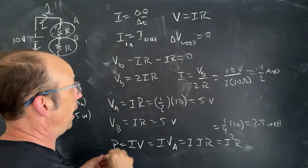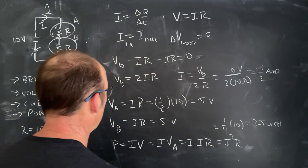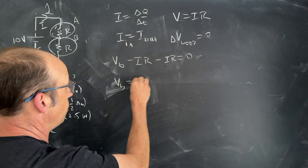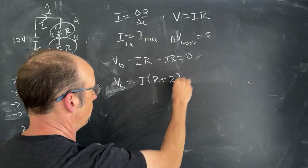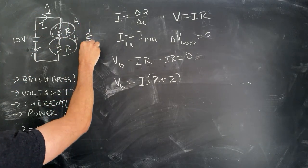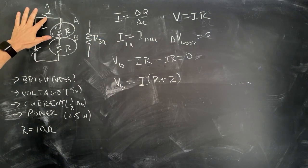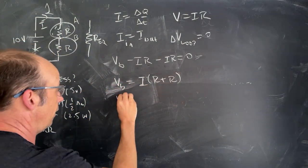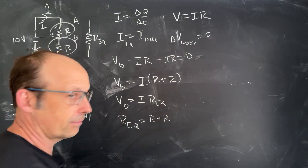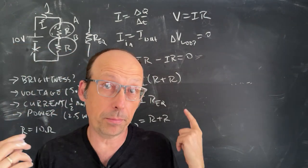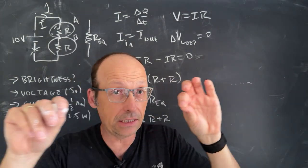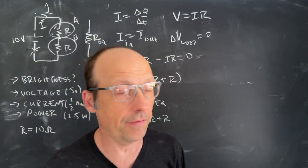Because they have the same current, I can factor that out and write V_B equals I times (R + R). It's possible to replace two series resistors with a single equivalent resistor R_eq where V_B equals I·R_eq, so R_eq equals R plus R — it's just the sum of the resistors. In general, for resistors in series, you simply add up all their values to get one single equivalent resistor.